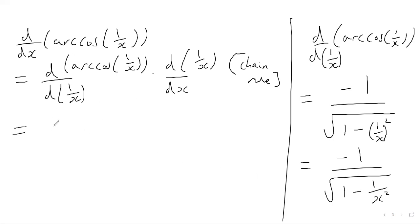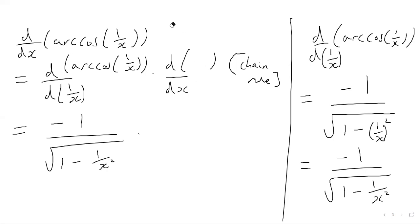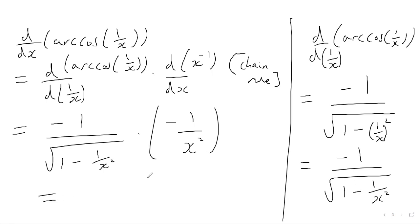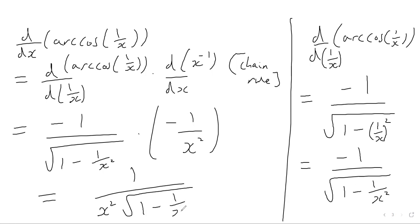Now we plug this in. We have negative 1 over the square root of 1 minus 1 over x squared, multiplied by the derivative of 1 over x. Differentiating x to the power of minus 1 gives minus 1 times x to the minus 2, which is negative 1 over x squared. Multiplying top by top and bottom by bottom: negative 1 times negative 1 gives positive 1, so we get 1 over x squared times the square root of 1 minus 1 over x squared.